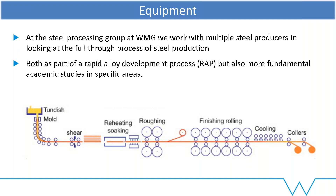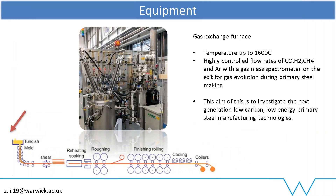Starting at the very beginning for primary steel making, we have this gas exchange furnace — Zushu runs this suite of equipment. We're really looking at mimicking things like blast furnaces and baths, and seeing what's the next generation in primary steel making: low carbon, low energy steel manufacturing. That involves incredibly high temperatures and gases you really don't want to do risk assessments for — pure hydrogen, carbon monoxide, methane. But with a gas mass spectrometer on the exhaust and heavily controlled gases going in, we can really see how gases evolve during steel processing.